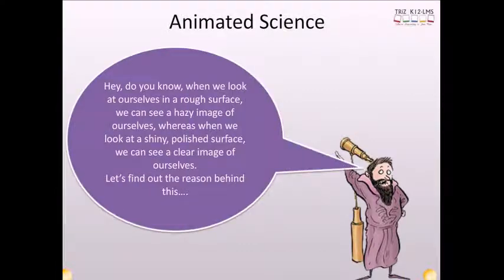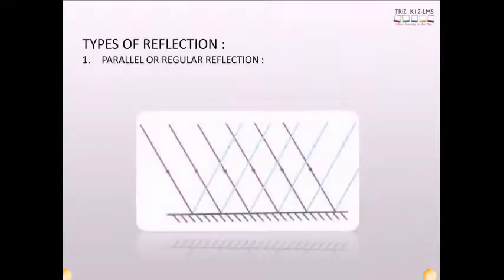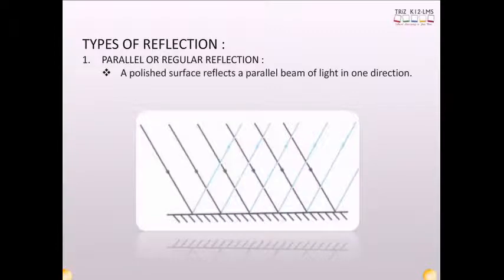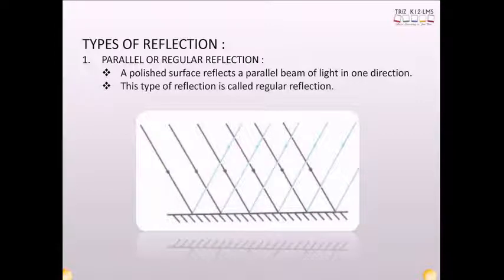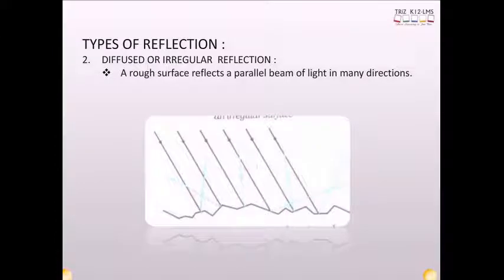Hey, do you know, when we look at ourselves in a rough surface, we can see a hazy image of ourselves, whereas when we look at a shiny, polished surface, we can see a clear image of ourselves. Let's find out the reason behind this. Types of reflection: Parallel or regular reflection occurs when a polished surface reflects a parallel beam of light in one direction. Diffused or irregular reflection occurs when a rough surface reflects a parallel beam of light in many directions.